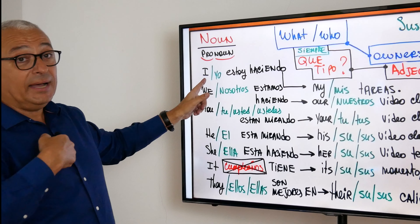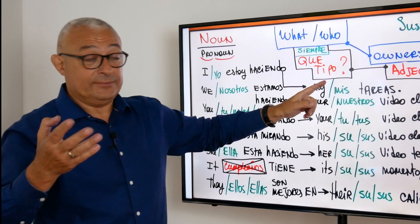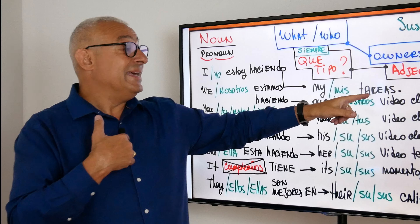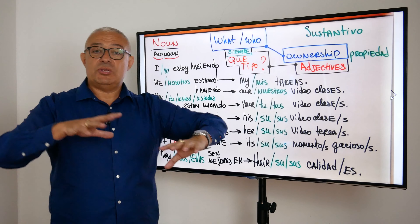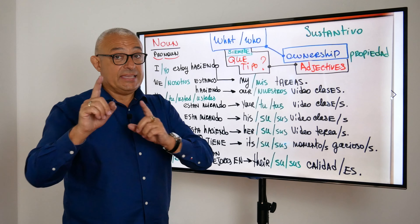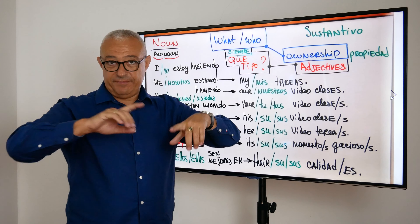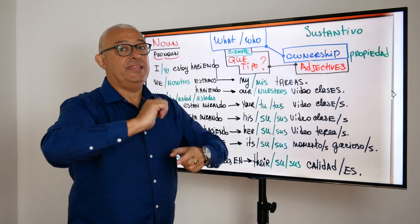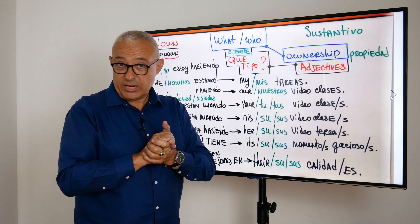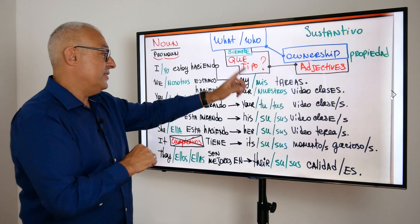Por ahora, estamos empezando en algo sencillo que te da cuenta cómo pensar en inglés. Y el segundo paso para nosotros es entender que hay una regla de Valerio. Es una regla de 100%. Entonces, todos los sustantivos deben tener alguna descripción. Siempre tenemos que tener alguna calidad o cualidad de los sustantivos. Hay una excepción pequeña, pero nosotros vamos a hablar de esa excepción más adelante. No quiero confundir cosas hoy. Vamos a ver unos ejemplos.